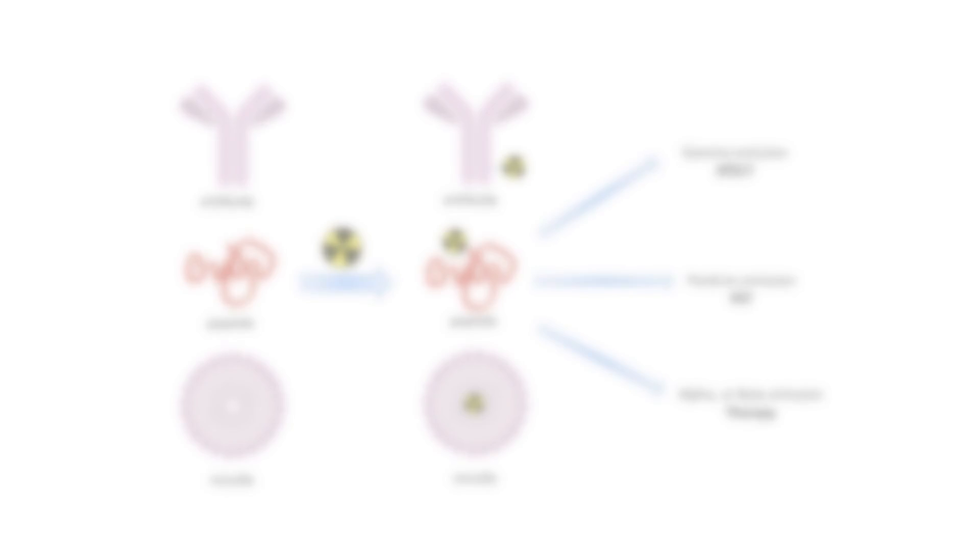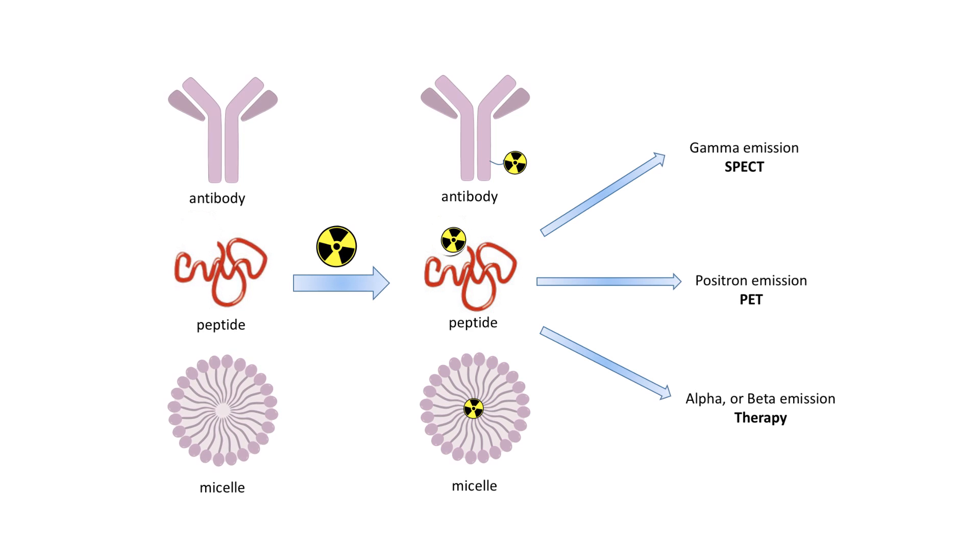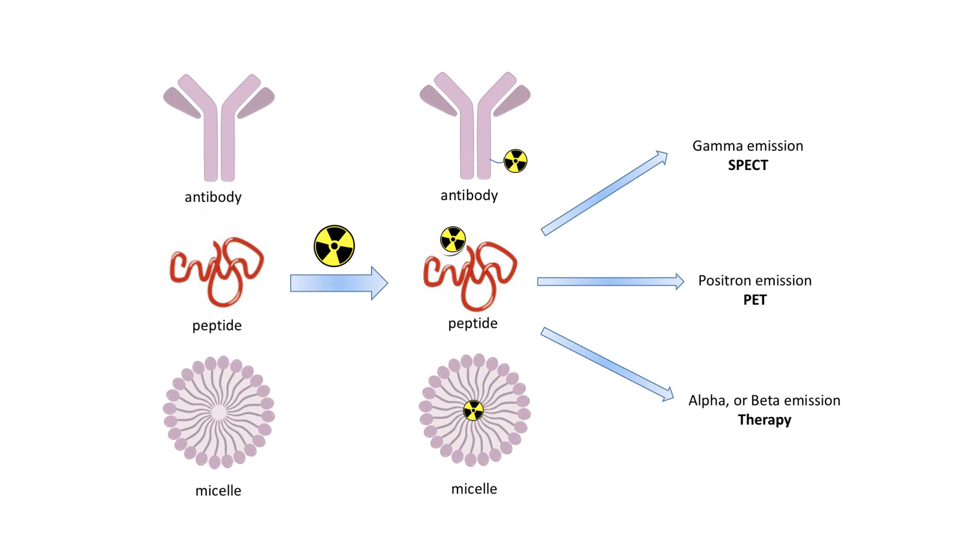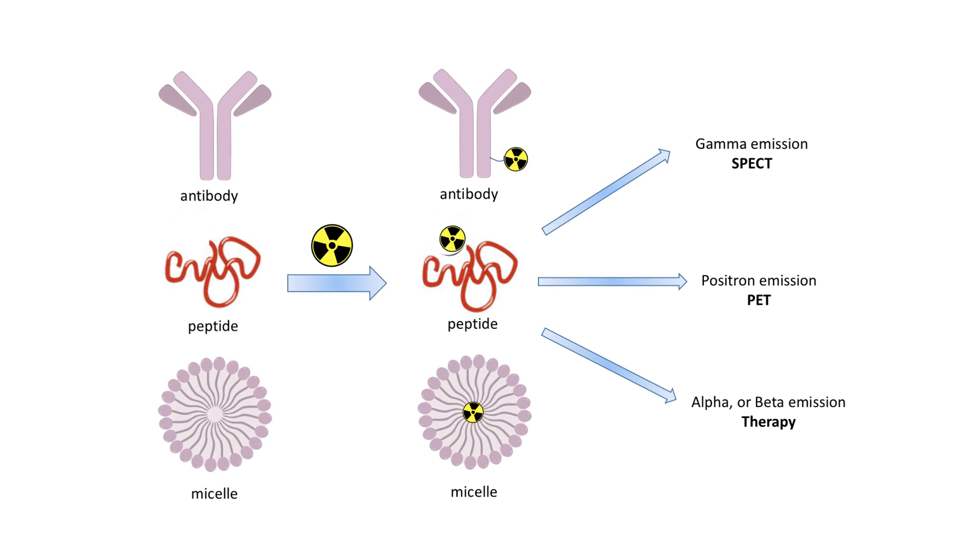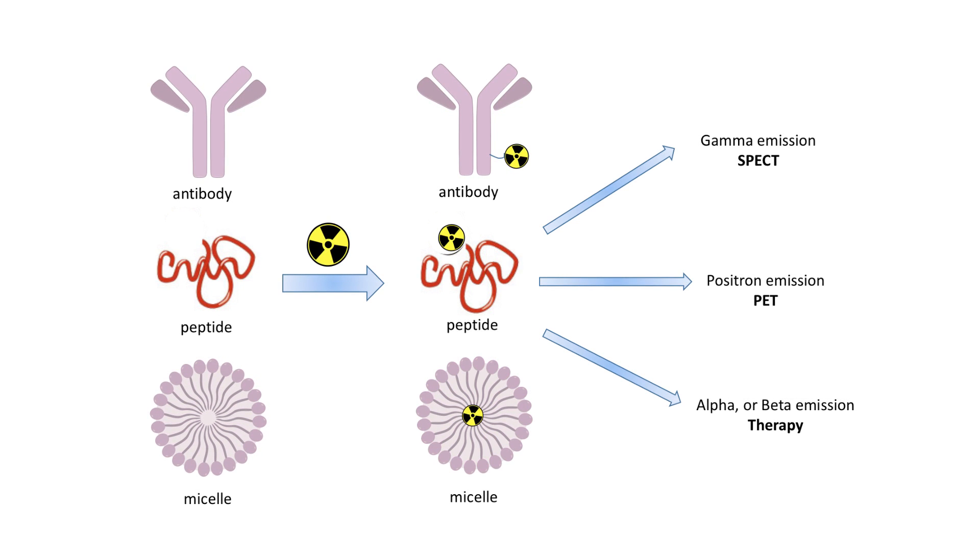Radiopharmaceuticals are molecules, and they could be small molecules, peptides, antibodies, or even nanoparticles which are radio-labeled with an isotope. And this isotope can decay in a way that allows you to do either imaging or therapy. If it decays by gamma, then you can do SPECT. If it decays by positron, you can do PET. And if it decays by a therapeutic emission, such as an alpha particle, then you can do therapy.